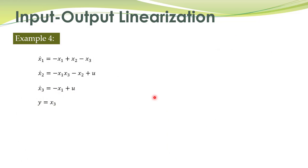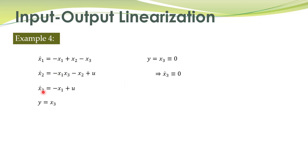We have one more example. Before performing input-output linearization we need to check the zero dynamics. These steps are now familiar: we substitute the output to be identically equal to zero. x3 equal to zero means x3 dot equals zero, which means x1 equals zero.